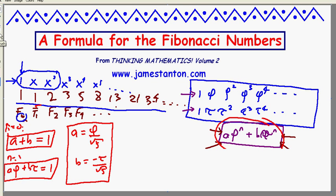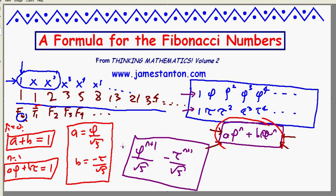This tells me that this sequence, here it goes, I'm going to write it out. a times phi to the n, that would be phi to the n plus 1 over root 5, plus b times tau to the n, that would be minus tau to the n plus 1 over root 5, has the property, in fact let me give it a name, let's call it g_n.